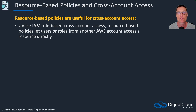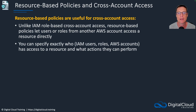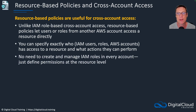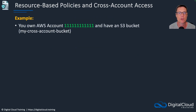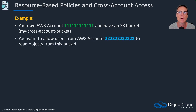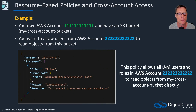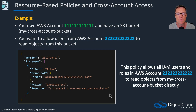Resource-based policies are very useful for cross-account access because they let users or roles from another account access a resource directly. You can specify exactly which IAM users, roles, or accounts have access, and what actions they can perform — with no need to create and manage IAM roles in every account. For example, if you own an account and have an S3 bucket called my-cross-account-bucket, and want to allow users from another AWS account to read objects, you'd use a policy allowing that account's root — meaning all IAM users and roles — to perform S3 GetObject on that bucket.